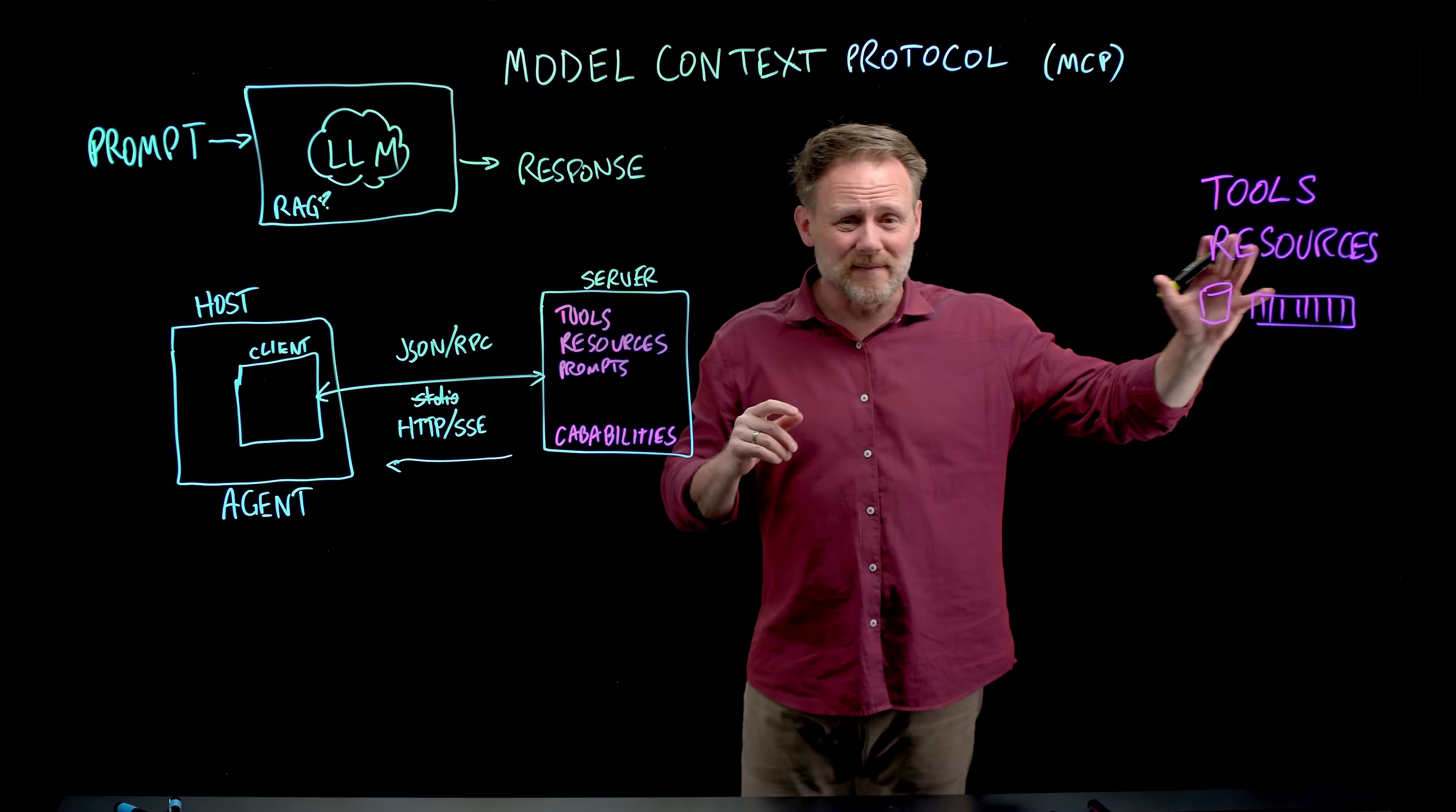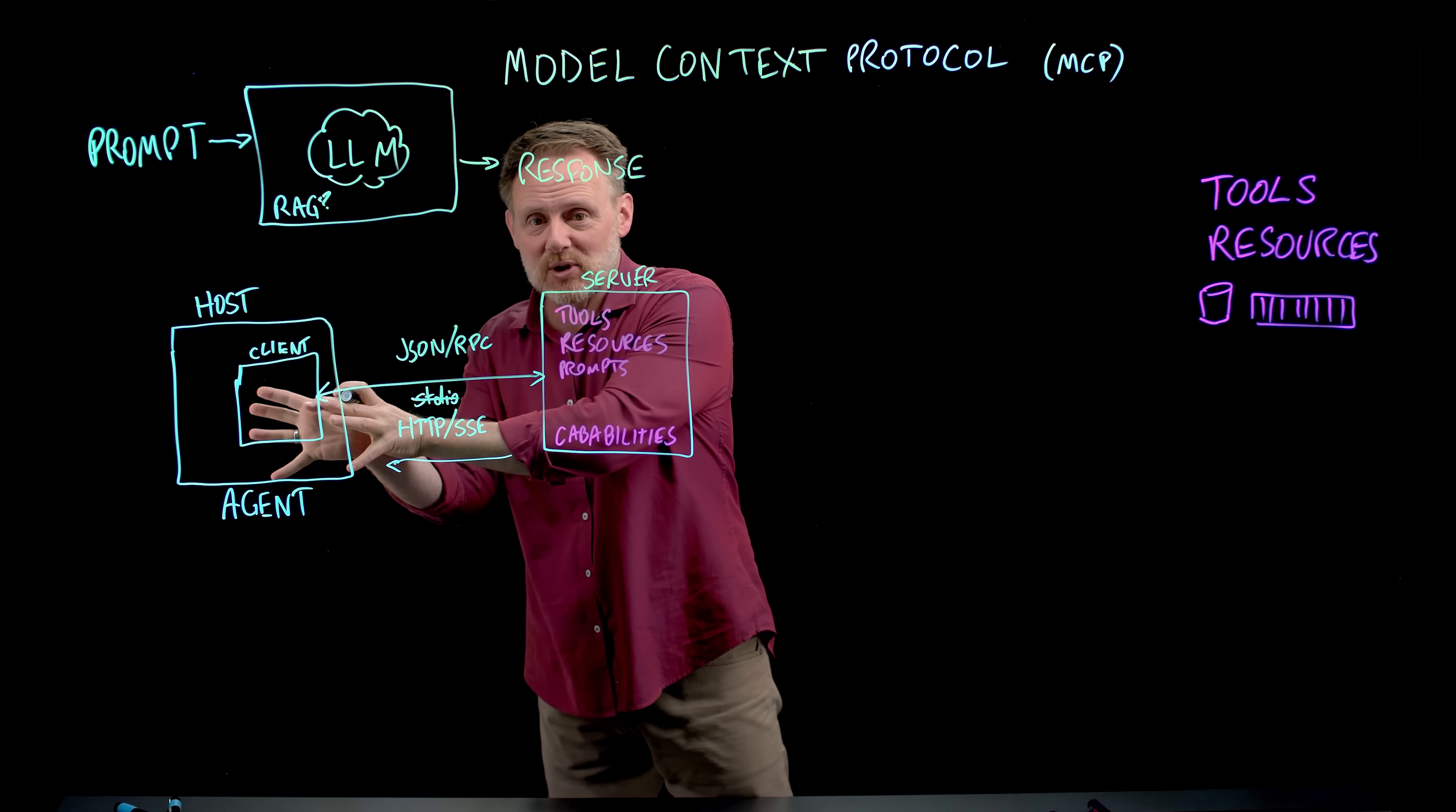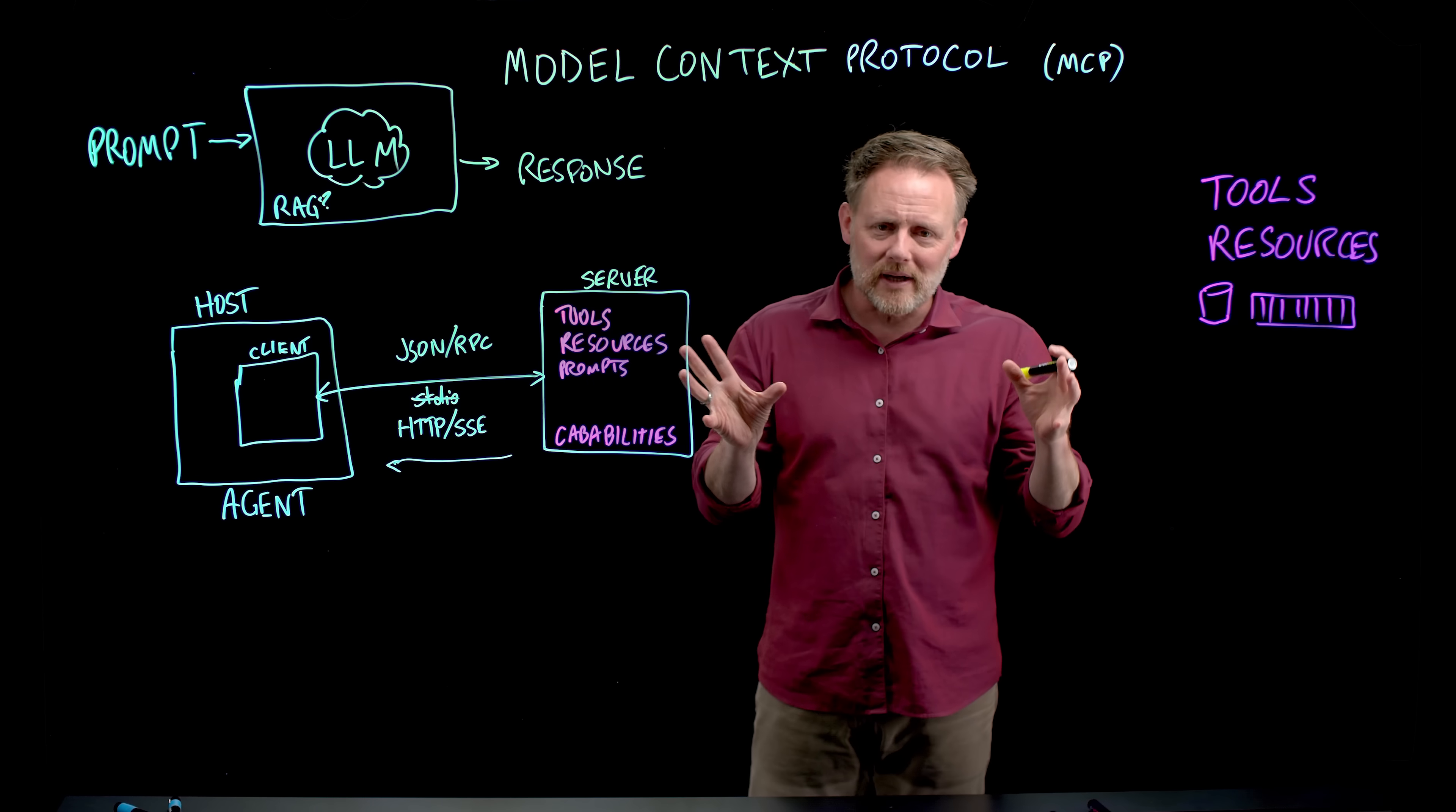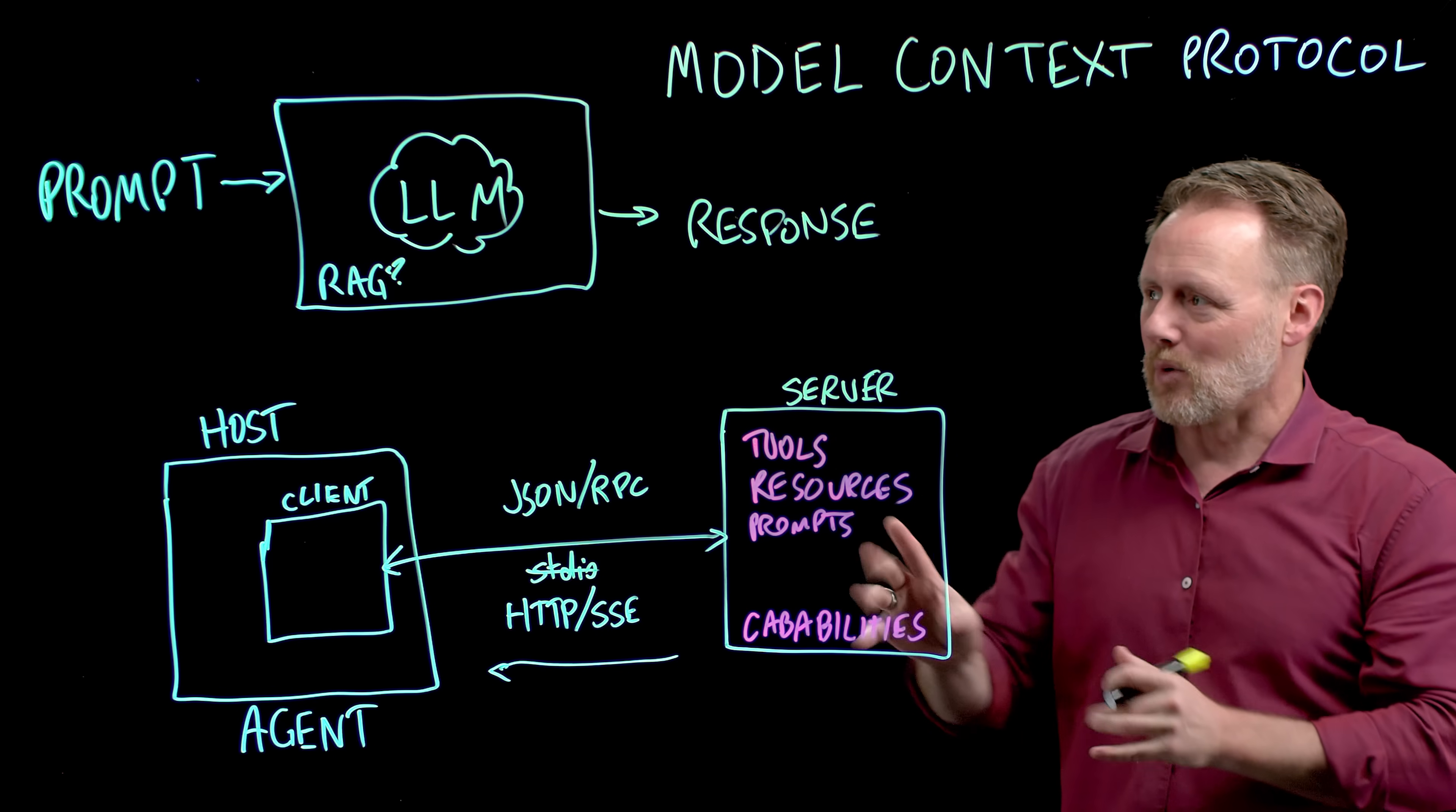I could just do all that stuff. Do the calendar integration. Go talk to Yelp or whatever APIs I want to do and bake that into my agent. But then it's locked there and nobody else can get at that unless they've got that code. So the whole idea of MCP is I'm putting those things in here. Let's go through a workflow of how this might work.